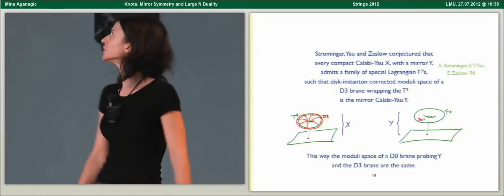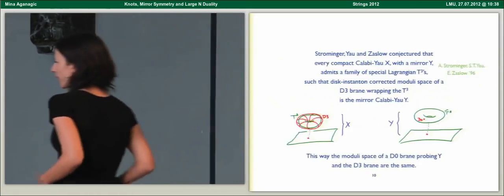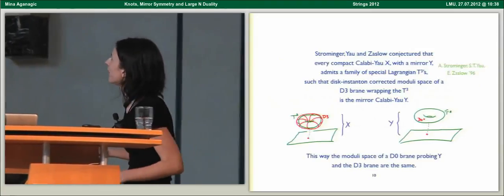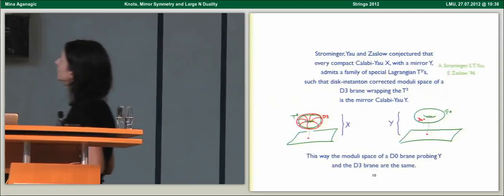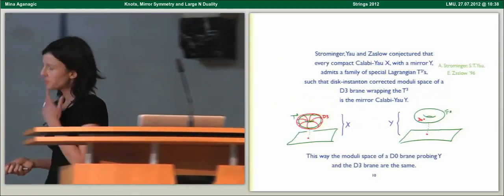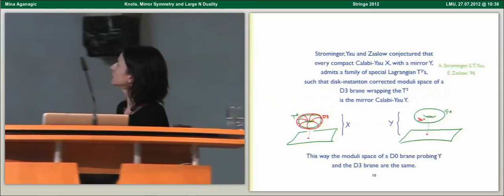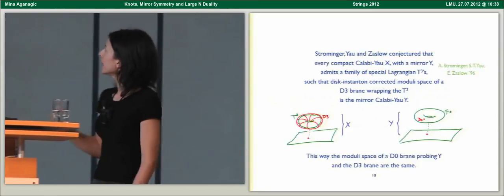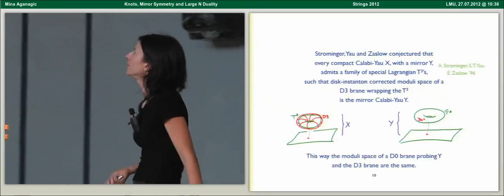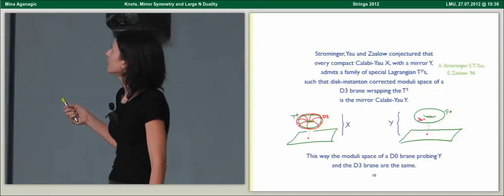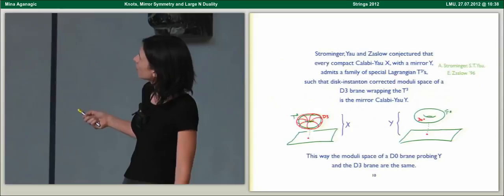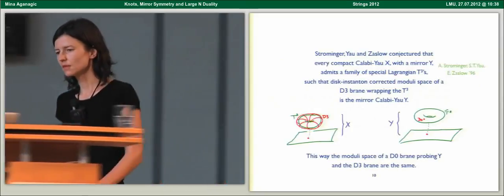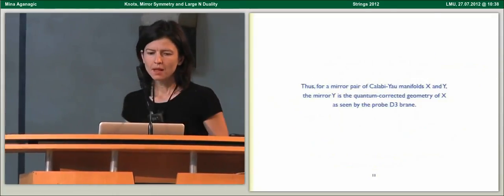Strominger, Yau, and Zaslov conjectured that every compact Calabi-Yau manifold X with a mirror Y admits a family of special Lagrangian T3s, such that the disk instanton-corrected moduli space of a D3 brane wrapping the T3 fiber is the mirror Calabi-Yau. In this way, the moduli space of a D0 brane probing the mirror and the D3 brane on the original space are the same.